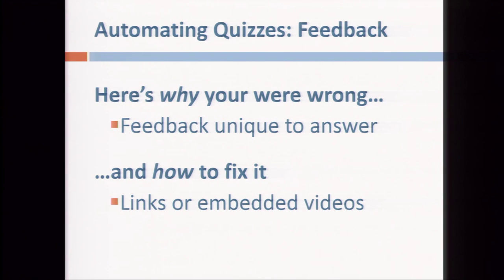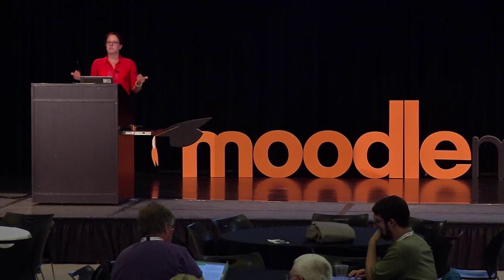You can also provide feedback specific to a wrong answer. Rather than just 'it's wrong,' if you have a common wrong answer — for example, what's 3 times 3, and 6 was a common wrong answer — you could say if they put 6 in the box they still get a score of 0, but the feedback says 'whoops, you added instead of multiplied.' That's different feedback than the kid who maybe put in 27. So make sure you put feedback specific to wrong answers that you frequently get.